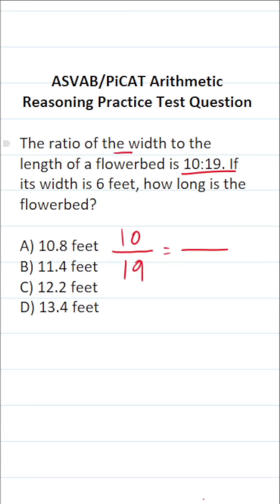We know the width of the flowerbed is 6 feet. We want to know its length. Its length is unknown, so we'll call that X feet long.